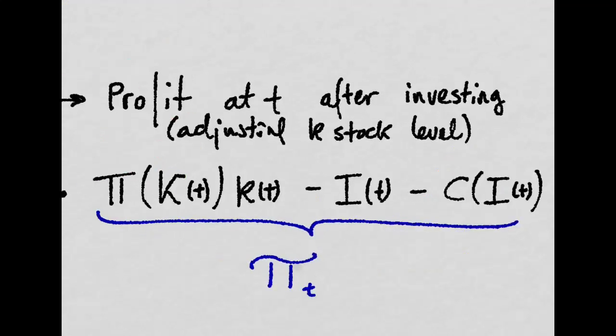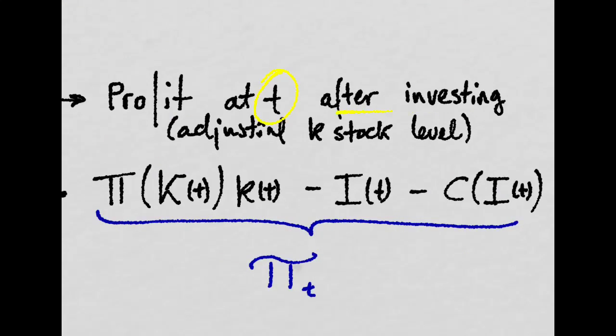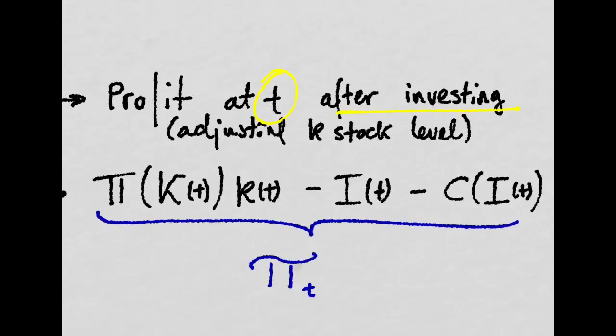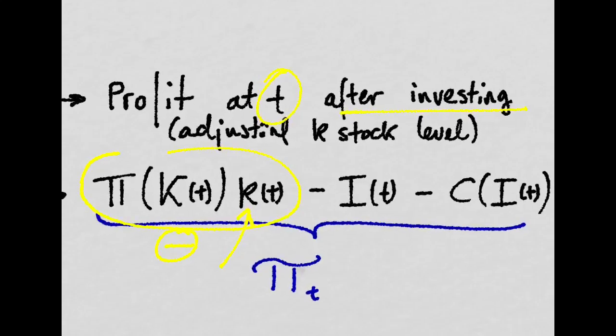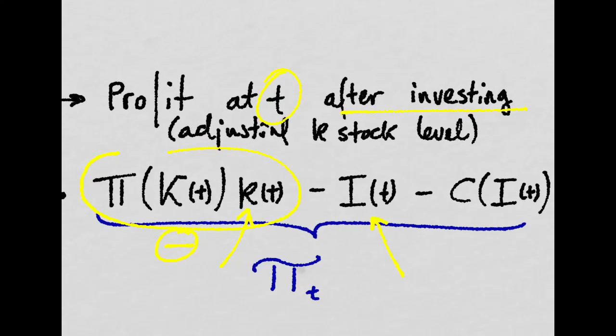Thus, at period t, after investing, the firm has a profit of profit before the adjustment takes place, which depends negatively on the aggregate stock of capital in the economy and is proportional to the firm's capital stock, to which we subtract the acquisition cost of investing given that the price of capital is one, and some adjustment costs that we denote by C.